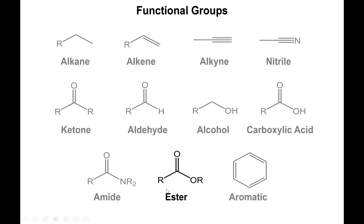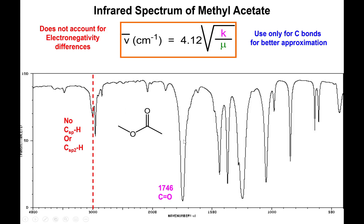Now let's look at esters. With esters, you do not have an O-H bond because the oxygen is connected to a carbon, so you do not see broad peaks above 3000. What you do see is a strong peak for the carbonyl bond, and this peak is quite strong — on par with the cyclic ketones discussed earlier — with a value roughly in the mid-1700s.